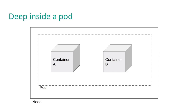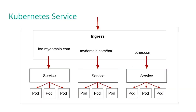Volume sharing is useful in two ways. First, it allows you to preserve data beyond the lifecycle of a container — container data is ephemeral, so if you want to preserve data when you stop and restart a container, you have to mount a volume. Secondly, the volume is necessary for sharing data between two containers. When you have multiple containers executing in the same pod, you must mount a volume so that data can be shared between them.